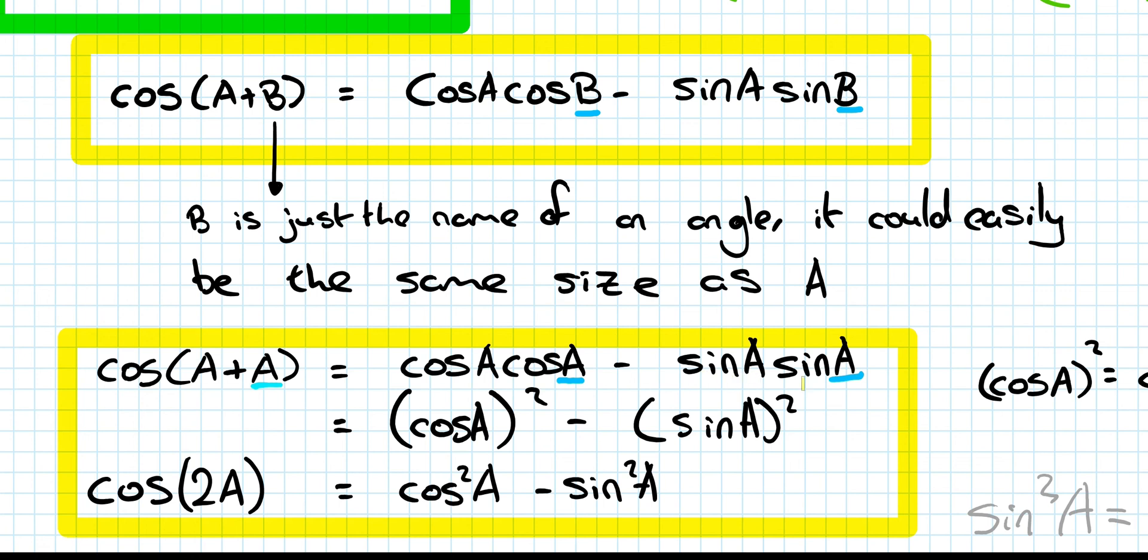Similar with the sine, sinA, sinA. We would multiply them together to get sin²A. And we end up writing it like that.